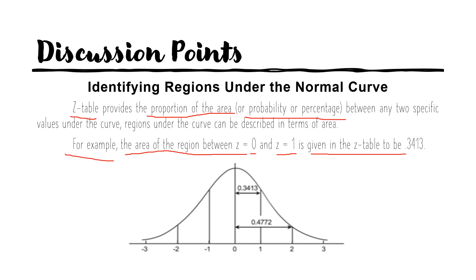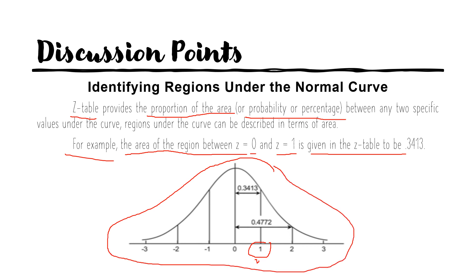So if your Z is equal to 1, the value of your area based on your Z-table will be equal to 0.3413. Now, with this normal curve, as you can see in the figure, there are 6 Z-scores allowed in every normal curve — 3 positive Z-scores at the right of your mean, and 3 negative Z-scores at the left: negative 1, negative 2, up to negative 3. We cannot exceed that number.